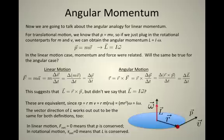If you have a system for which there's no net external torques acting on the system, then angular momentum will be conserved, and we can do conservation problems just like we did in the linear case.